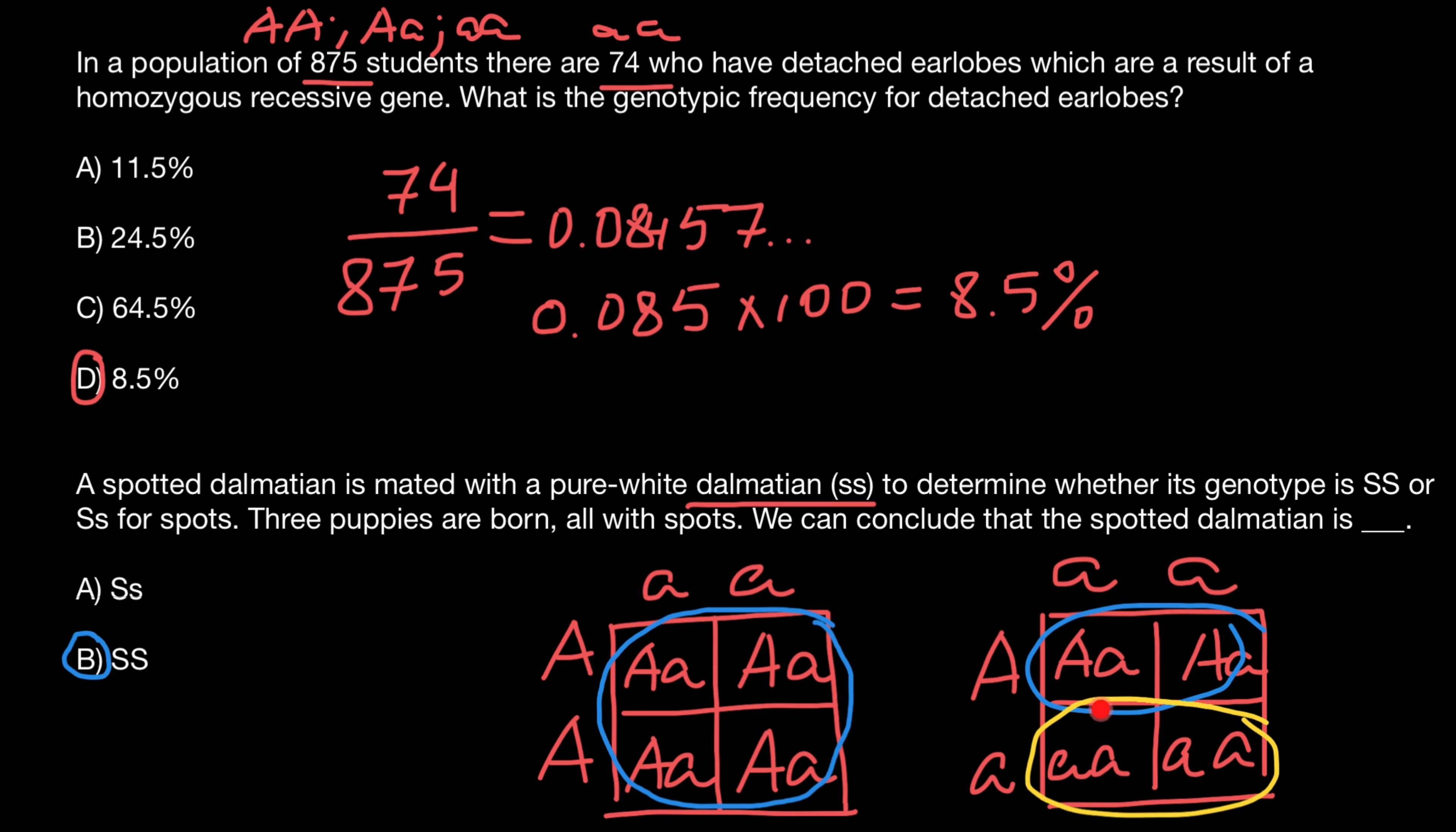Otherwise we will see dominant, which is spotted, and homozygous recessive genotype, which is pure white. But we see only progeny which are spotted. So we assume that this parent whose genotype is unknown is homozygous dominant.